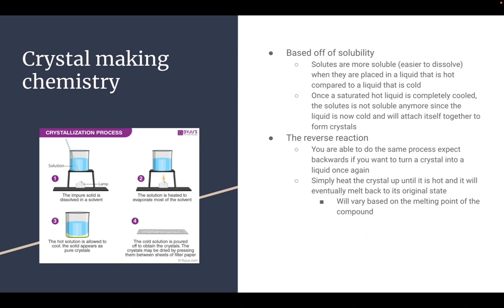So the chemistry of crystal making. It's basically based off solubility, and solutes are more soluble, which is easier to dissolve, when they are placed in a liquid that is hot compared to a liquid that is cold. Once a saturated hot liquid is completely cooled, the solutes are now not soluble anymore.